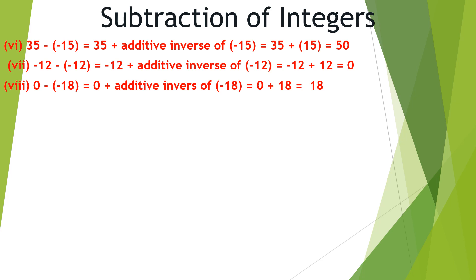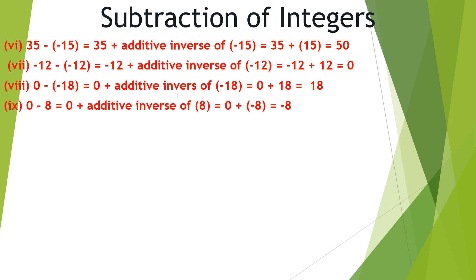0 minus minus 18 is equal to 0 plus the additive inverse of negative 18, which equals 0 plus 18, equals 18. Now 0 minus 8 is equal to 0 plus the additive inverse of 8, which equals 0 plus negative 8, equals negative 8.